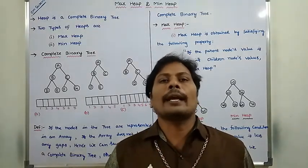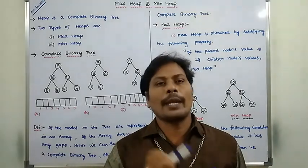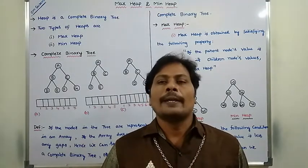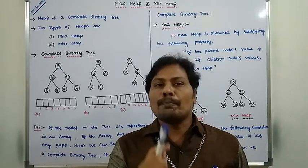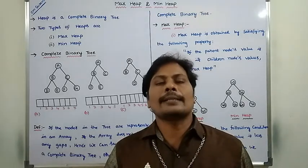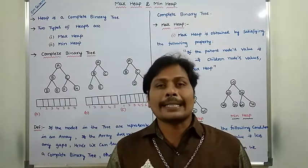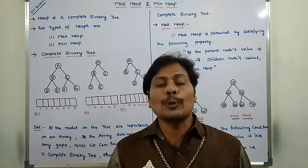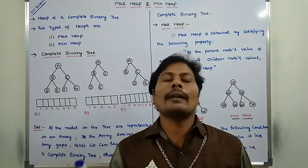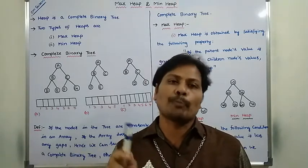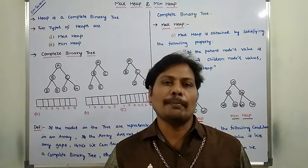Heap is a complete binary tree, and it is also a data structure. So first of all, what is complete binary tree? A complete binary tree is a binary tree in which all the nodes except the last level has two children, and the nodes in the last level are as left as possible. So this is the definition of complete binary tree.